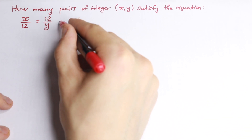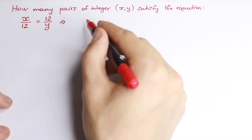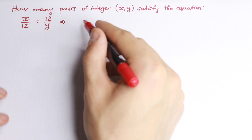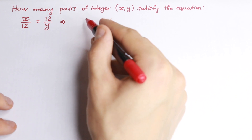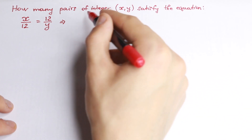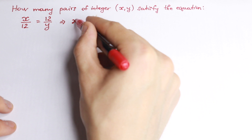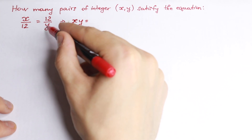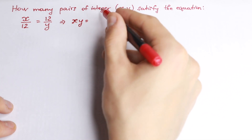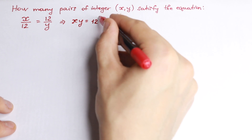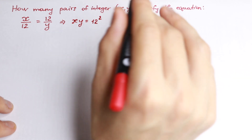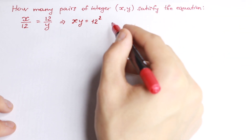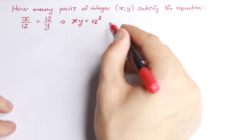So how can we solve this? Let's try to simplify a little bit. We have x over 12 equal to 12 over y. Let's use cross-multiplying — we will have x times y equal to 12 times 12, equal to 12 squared, or 144.